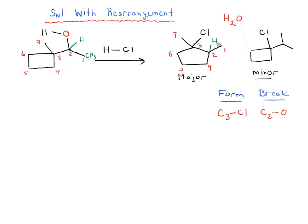We clearly formed C3 to Cl. Anything else different about carbon 1? No. Carbon 1 is the same. But carbon 2, besides having broken off this oxygen, carbon 2 is different in that it has a new bond to carbon 4.